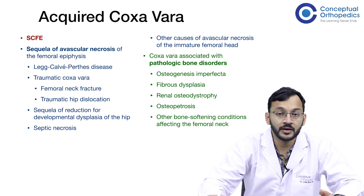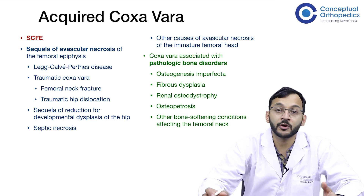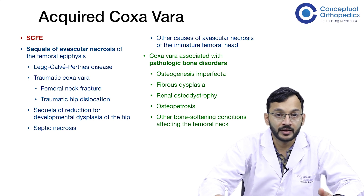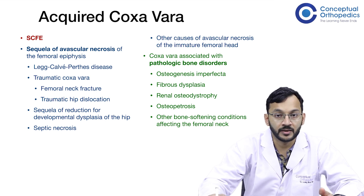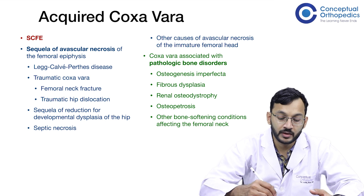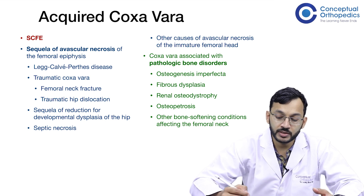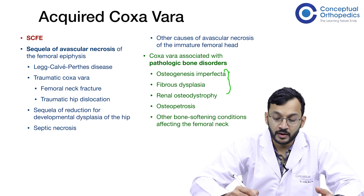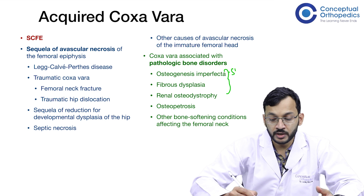Coxa vera can also be associated with pathological bone disorders such as osteogenesis imperfecta, fibrous dysplasia, renal osteodystrophy, osteopetrosis, and other bone-softening conditions affecting the femoral neck. These conditions are also known to produce a shepherd's crook deformity.